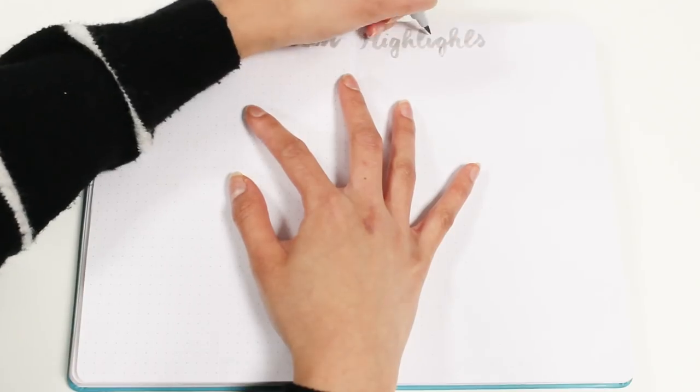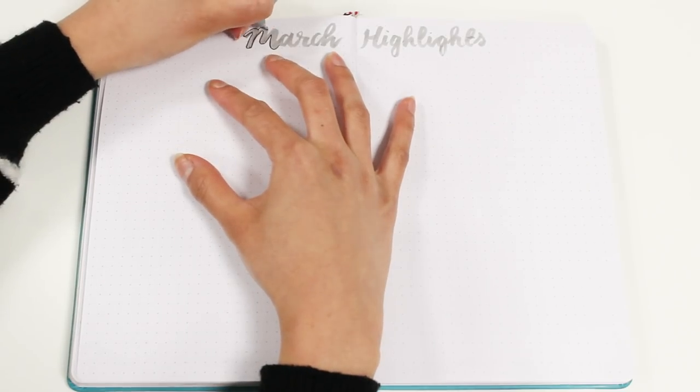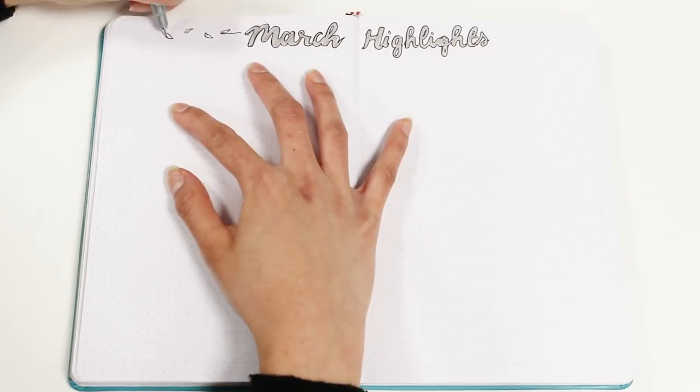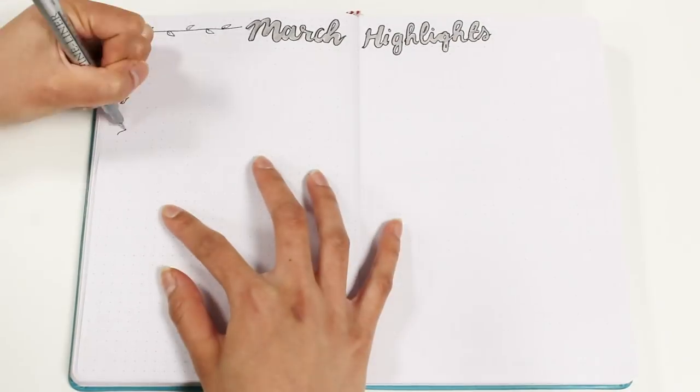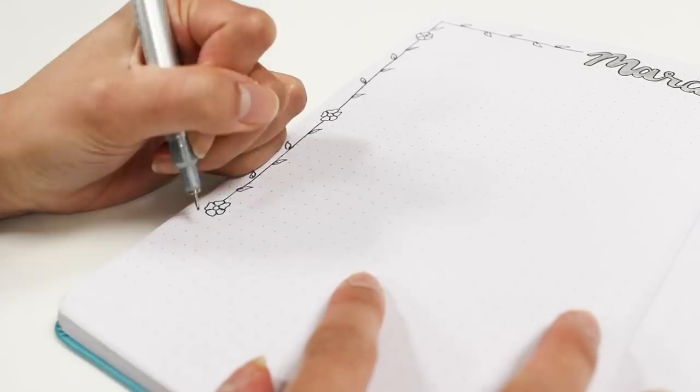Next I have my highlights page, which I really like doing because I like to look back on the best parts of the month. For this I'm just writing 'March highlights' and then I'm adding a flower border to frame the page.